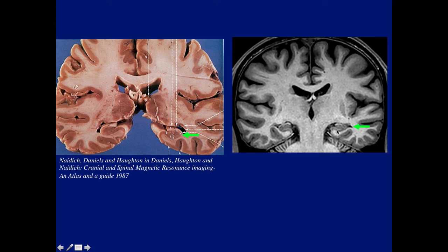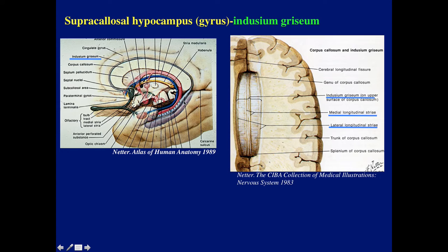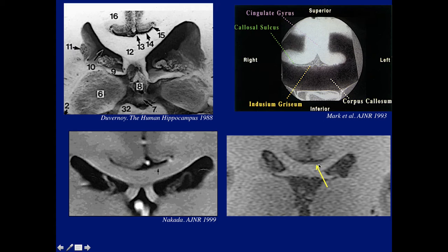We all know that these are the hippocampi here in the temporal lobe, but they occupy a very small part of a very large brain. When talking about the limbic system, I was talking about the supracallosal hippocampus, also known as the indusium griseum, here demonstrated by Netter, overlying the corpus callosum. So what is the hippocampus doing above the corpus callosum?